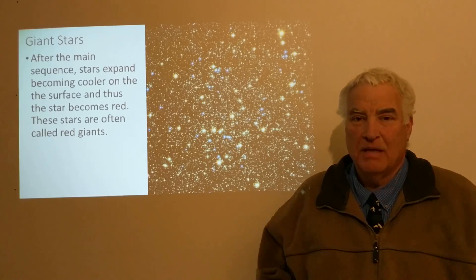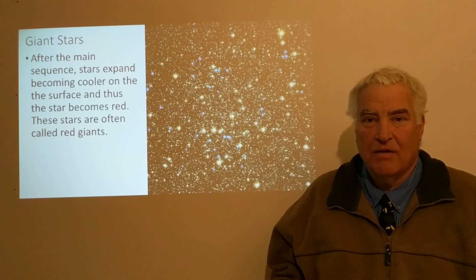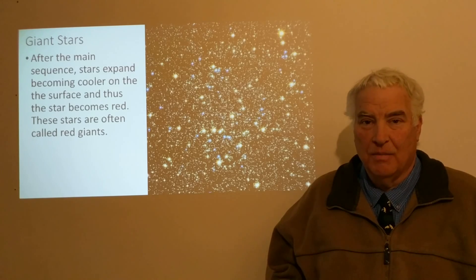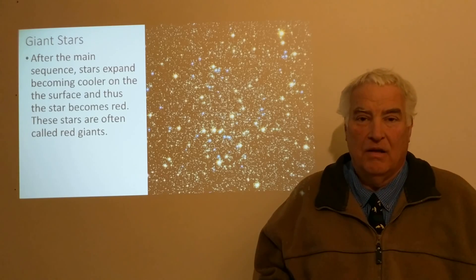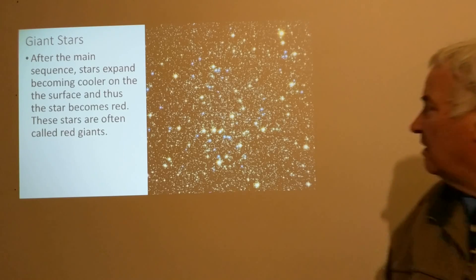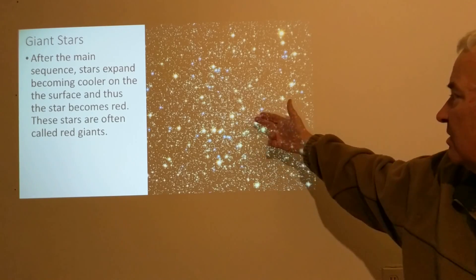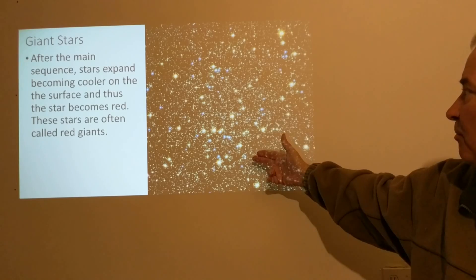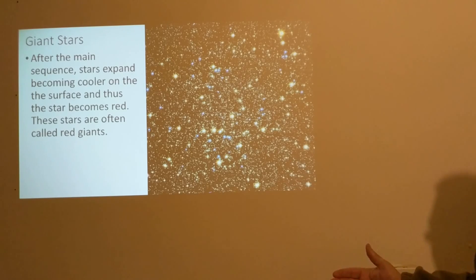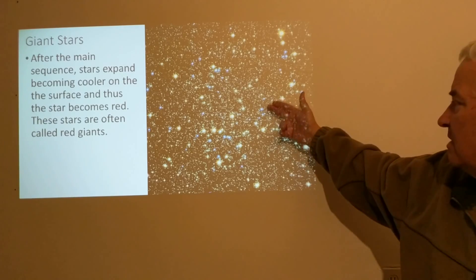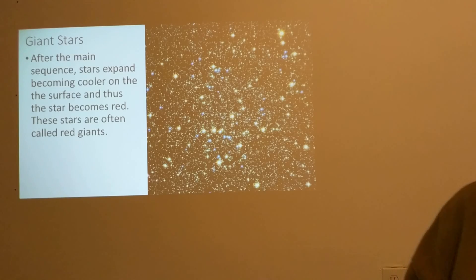After the main sequence, stars convert the supply of hydrogen in their cores into helium, then transition into red giant stars. These stars can be seen in a cluster like this where we can see many bright red stars along with bright blue stars and many fainter stars. On the HR diagram we see the blue stars are main sequence stars and the red stars are red giant stars.